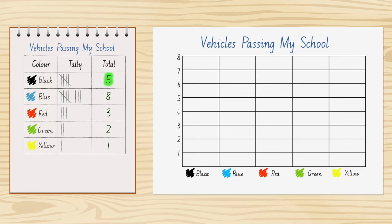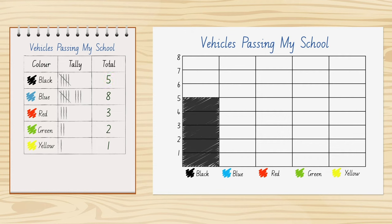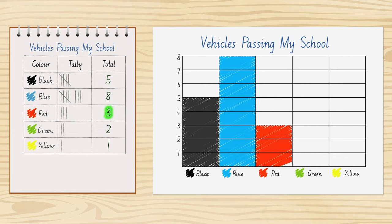There were five black vehicles, eight blue vehicles, three red, two green, and one yellow vehicle.